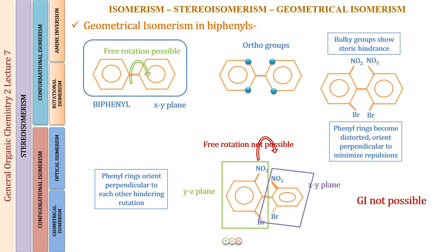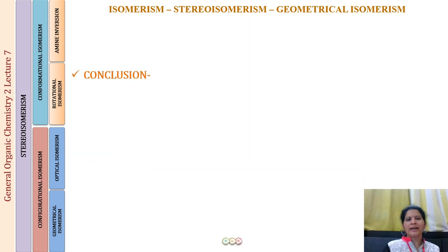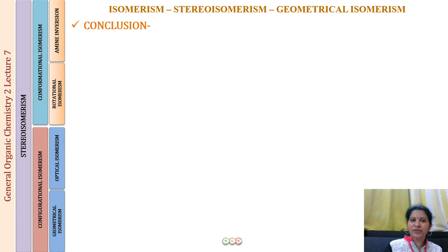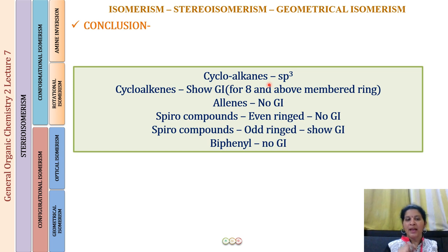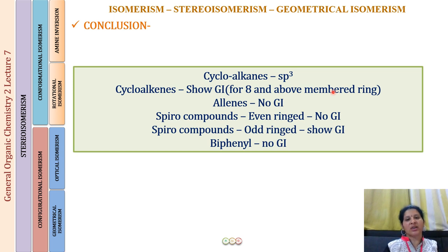To conclude today's lecture: cycloalkanes show GI due to restricted rotation from the ring, with cis and trans determined by substituent orientation relative to the ring plane. Cycloalkenes show GI only for rings of eight or more carbons; below that only cis structures exist. Allenes with an even number of consecutive double bonds do not show GI, while those with an odd number do.